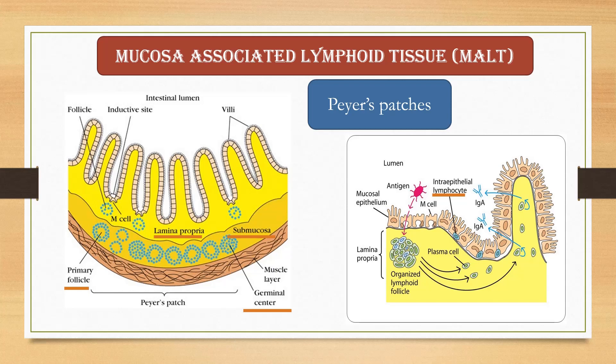Peyer's patches show immune response when exposed to antigen. Antigen is carried by M cells, which are present in the inductive site of the intestinal luminal membrane. It activates the lymphocytes present in the luminal membrane, which in turn activates the lymphoid follicles in the lamina propria.